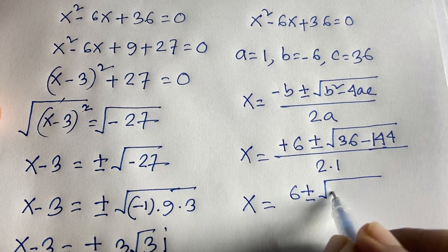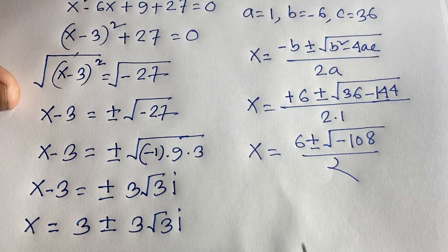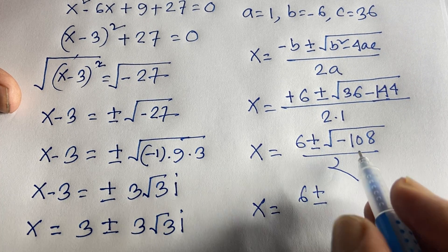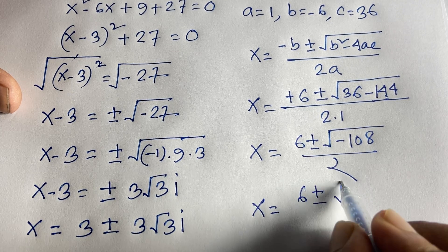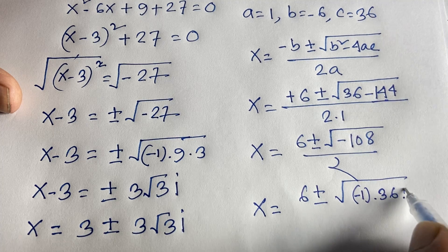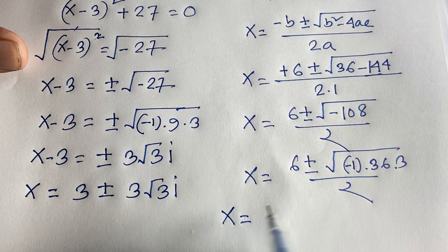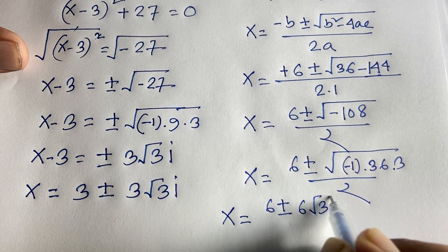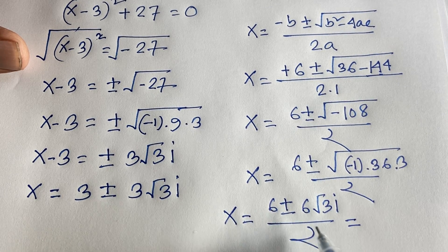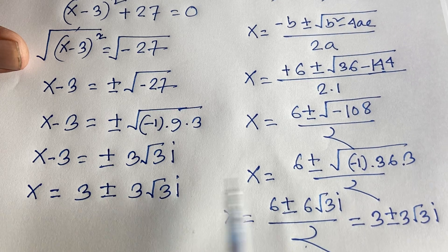That gives x equals 6 plus or minus square root of (36 minus 144), all over 2, which is 6 plus or minus square root of minus 108, over 2. We factor minus 108 as minus 1 times 36 times 3. So square root of minus 108 equals 6 root 3 times i. Dividing by 2: x equals 3 plus or minus 3 root 3 times i — the same answer as before.